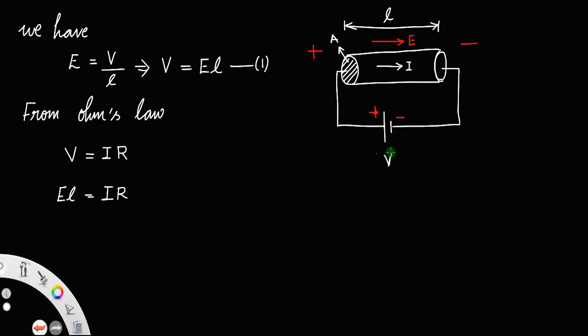Now, the current density J is the current flowing per unit area, I by A, which implies the current I will be J times the cross-sectional area.